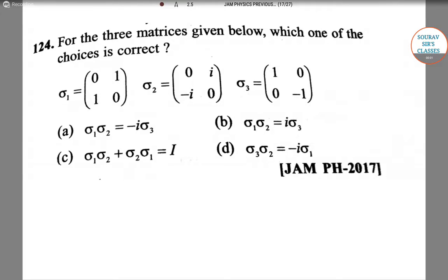Today's topic is JAM Physics 2017 question paper. For this question, three matrices are given below: Sigma one, Sigma two, and Sigma three. Which one of the choices is correct from the four options?